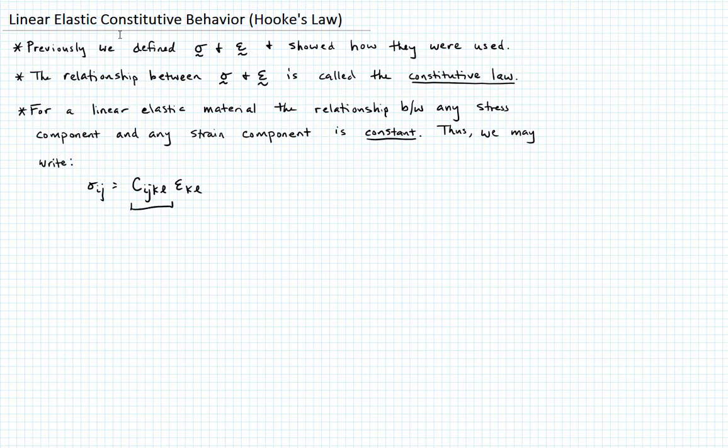This C_ijkl represents a fourth order tensor that contains these constants that are the relationships. We call this the stiffness tensor.